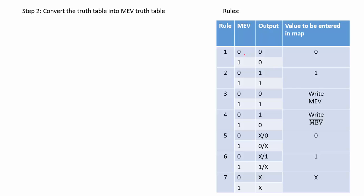Rule 1 is: when the map entered variable is 0, output is 0, and when the map entered variable is 1, output is also 0. So irrespective of the map entered variable, the output is always 0, and the value entered in the map will be 0. Rule 2 is: when the map entered variable is 0, output is 1, and irrespective of the map entered variable, the output is always 1, so the value entered in the map will be 1.